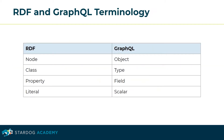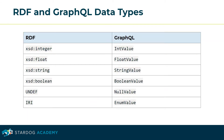RDF and GraphQL terminology are roughly parallel. In RDF you have nodes, classes, properties, and literals, and in GraphQL you have objects, types, fields, and scalars. RDF and GraphQL data types are also roughly similar, with integers, floats, strings, and so on.